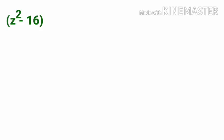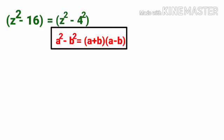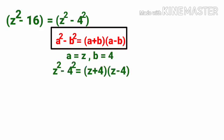Subdivision 1: z squared minus 16. This is the a squared minus b squared formula. z squared is correct. 16 means 4 multiplied 2 times, so 4 squared. Therefore z squared minus 16 equals z squared minus 4 squared. Applying the formula a squared minus b squared equals a plus b into a minus b, where a equals z and b equals 4, the answer is z plus 4 into z minus 4.